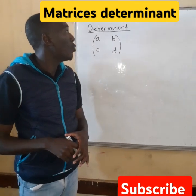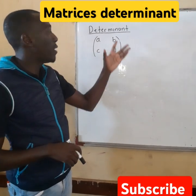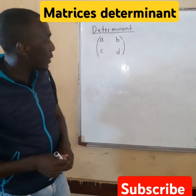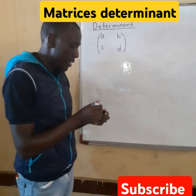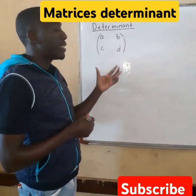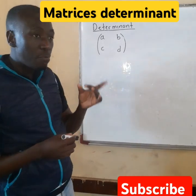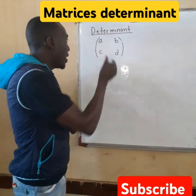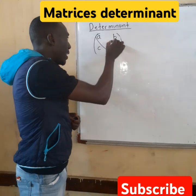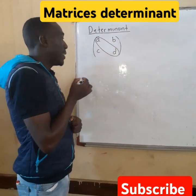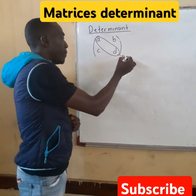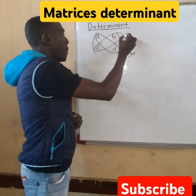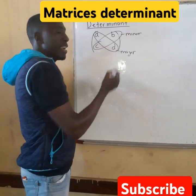We are going to speak on matrices — specifically, what is the determinant of matrices. The determinant of matrices: a determinant is the difference between the product of the major diagonal and the minor diagonal. That's our major diagonal, and this one is our minor diagonal.